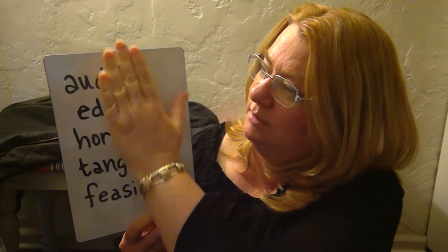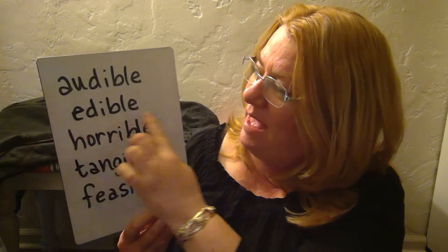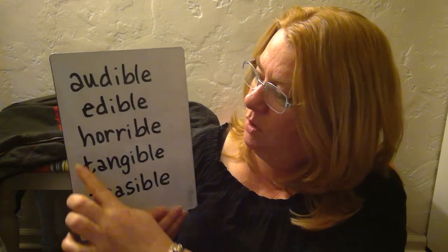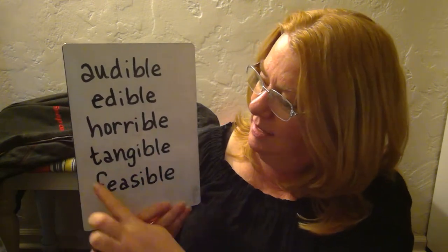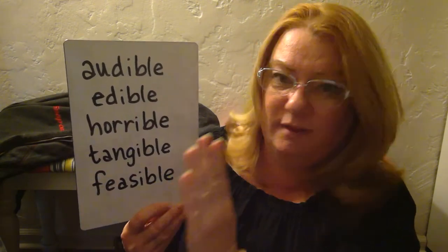Now with -ible, it's not a whole word that we use. We have 'audible' — we don't say 'aud' on its own, though it does relate to hearing, so you're able to hear: audible. Then we have edible, horrible, tangible, and feasible.